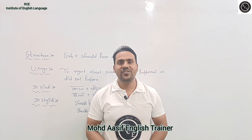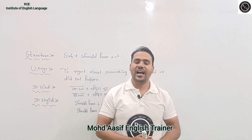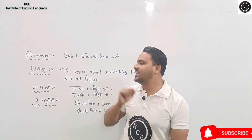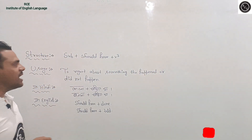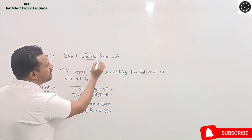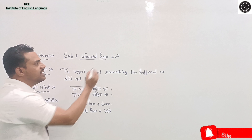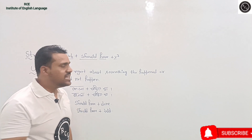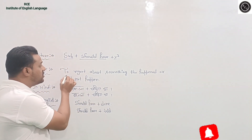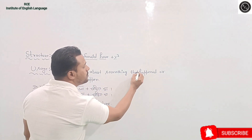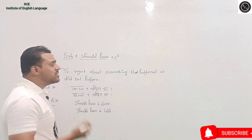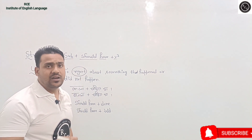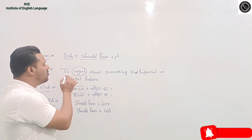Hello everyone, I am Mohammad Asif and I am your English trainer. Today I am going to teach you this structure: Subject + should have + verb third form. We use 'should have' with the third form of the verb. This structure is used to express regret about something — 'regret' means pashtava, ahsas hona — regret about something that happened or did not happen.